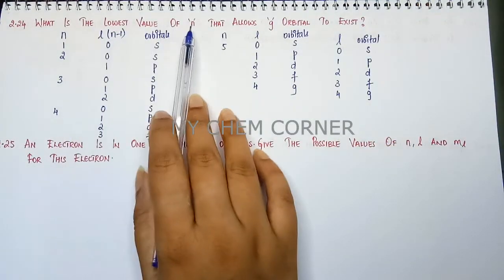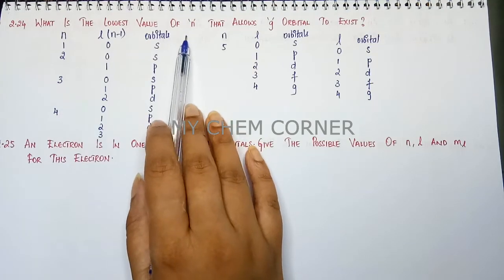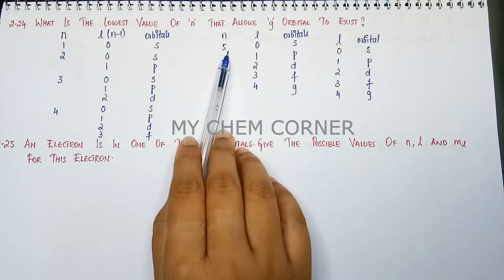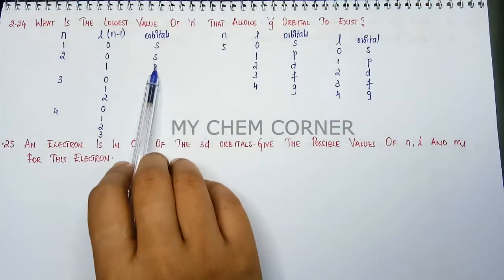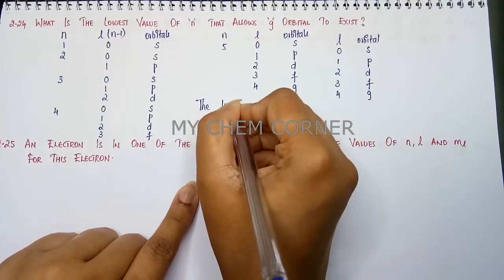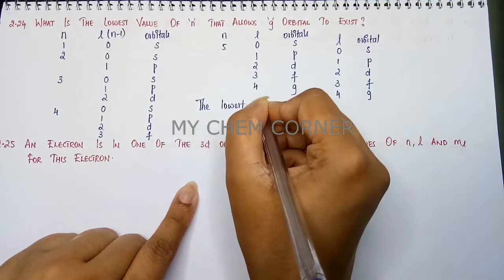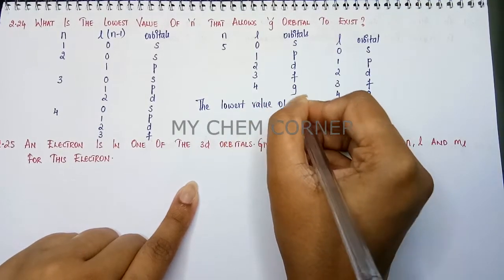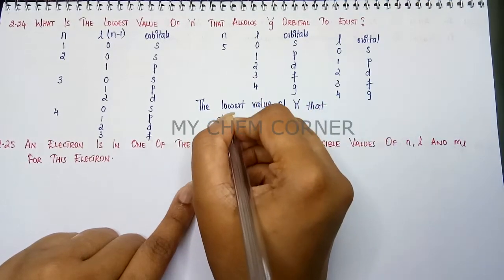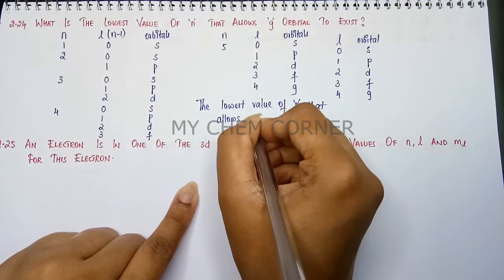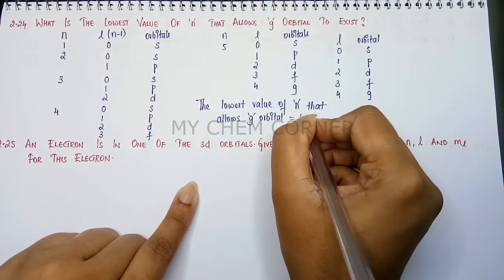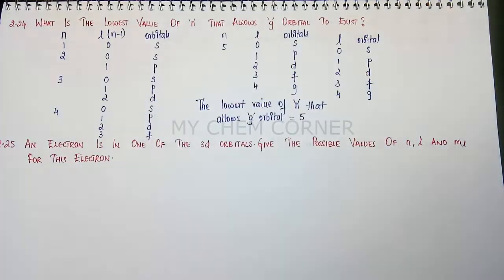So what is your question here? What is the lowest value of n which will allow g orbital? So what is the lowest value where g orbital actually started? n equals 5. Before that we did not get any g orbitals at all. So here you can write that the lowest value of n that allows g orbital is 5. So that is your answer for this question.